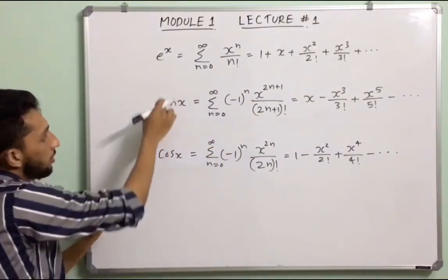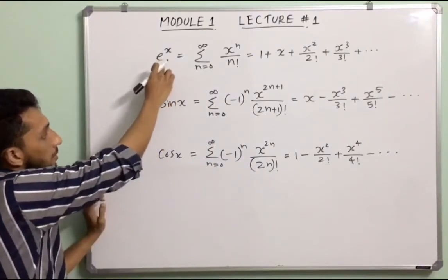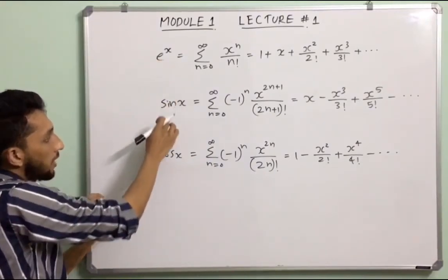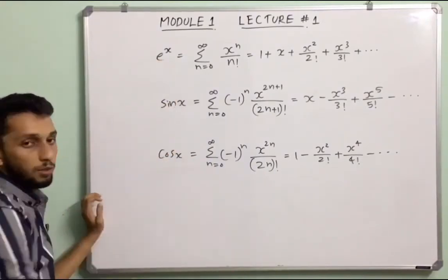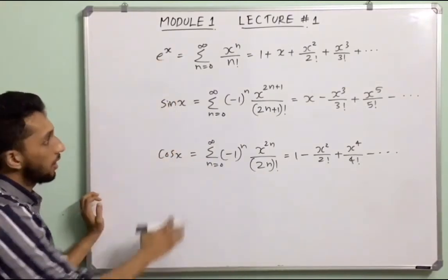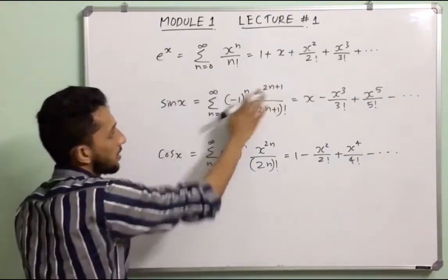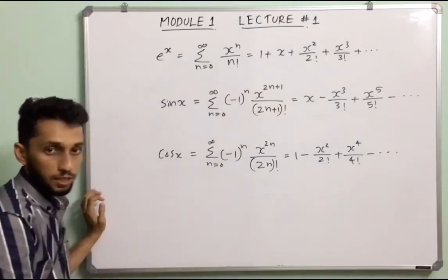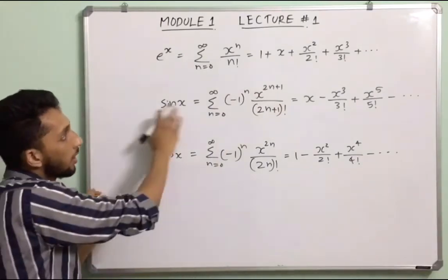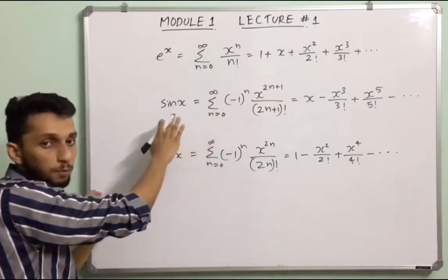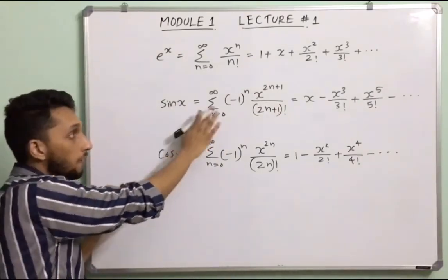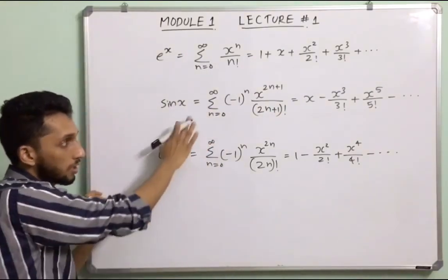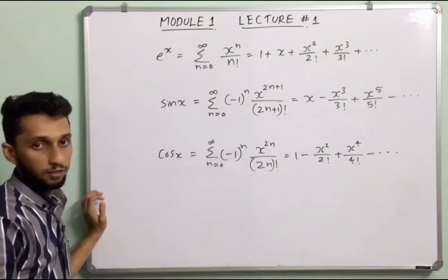These three functions — exponential, sine, and cosine — have Taylor series expansions, also called Taylor series representations or power series representations.